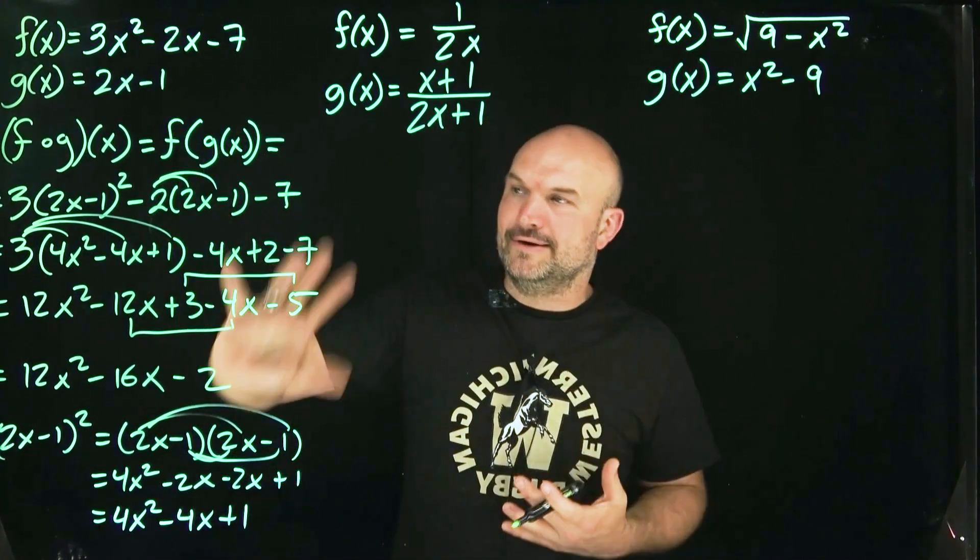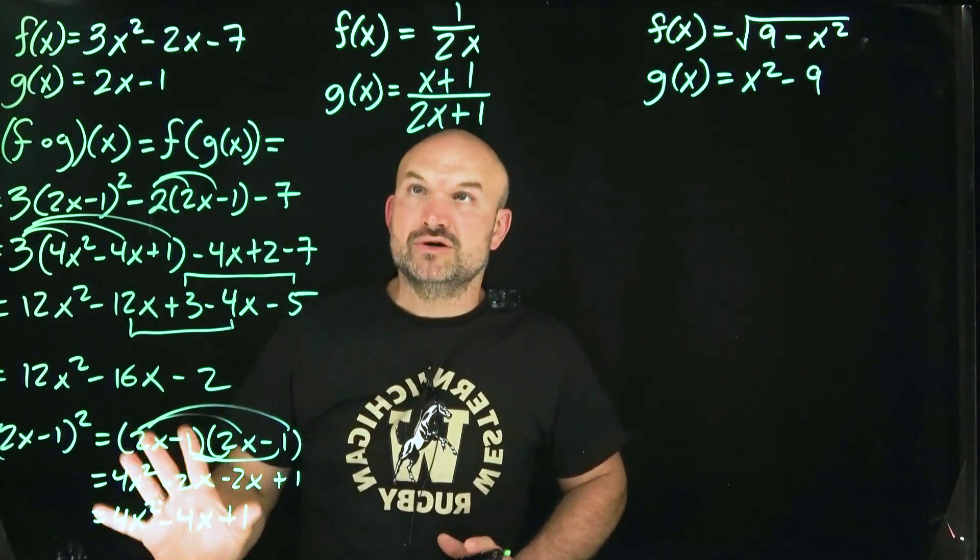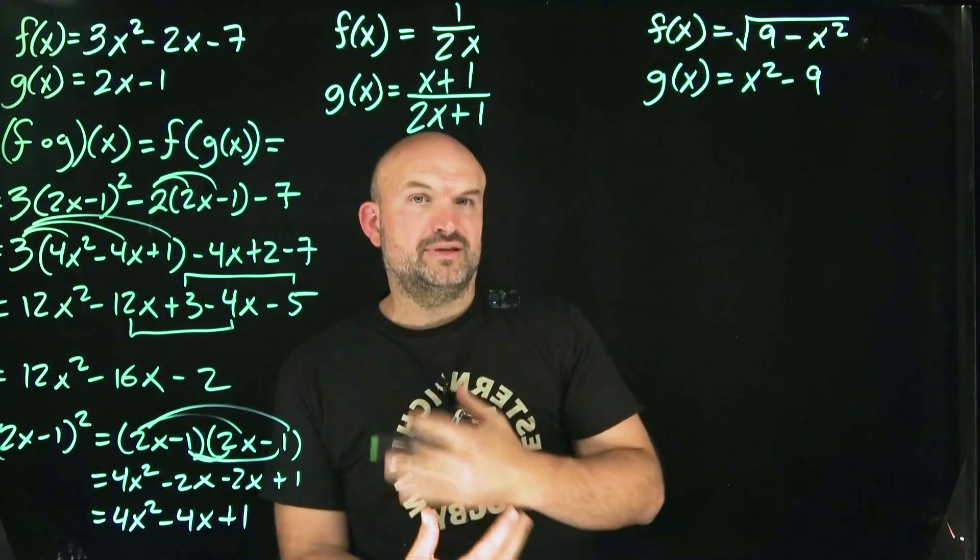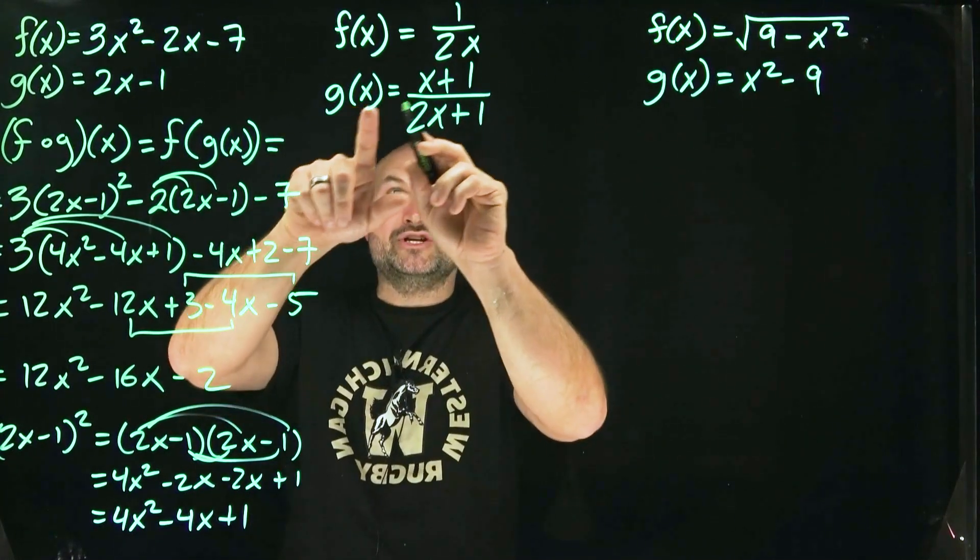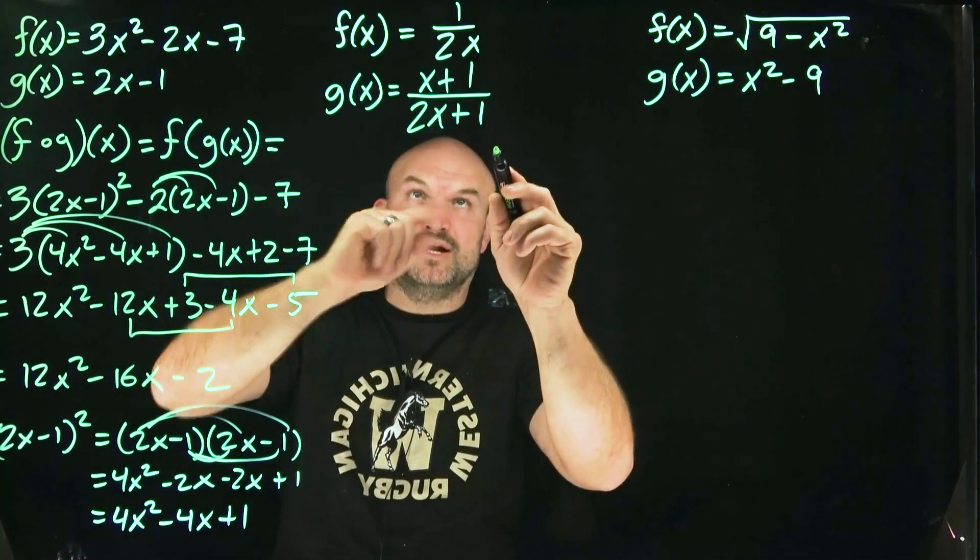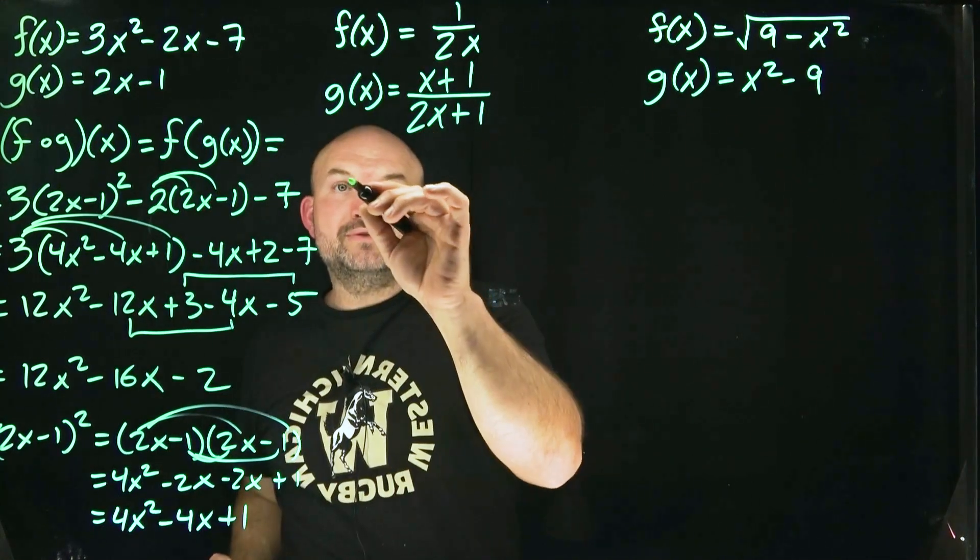Everybody's usually fairly familiar with polynomials, distributed property. We're comfortable with that. You know, I could have done an easy, easy one, but this one wasn't too bad for most students. Here, when we plug this in, it's going to look confusing, but let's kind of go through it. So I'm going to take my g of x, right, this function x plus 1 divided by 2x plus 1, and I'm going to plug that in for this input variable x up here.